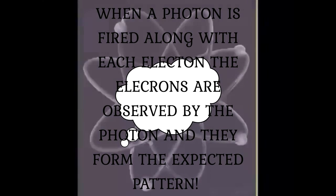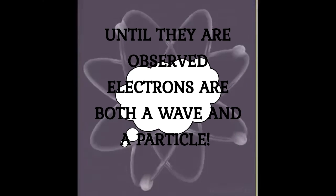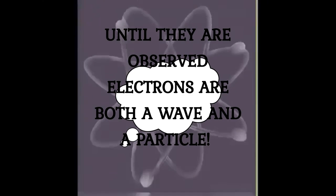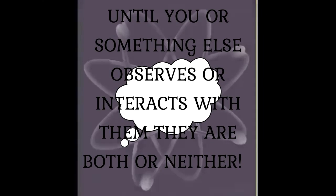As strange as this sounds, you cannot say that electrons are particles that sometimes become waves, nor vice versa. Electrons are everything and nothing, wave and particle, at the same time, until you or something else observe them and or interact with them.